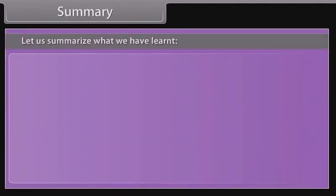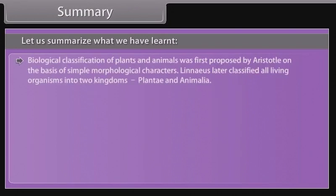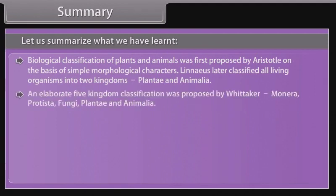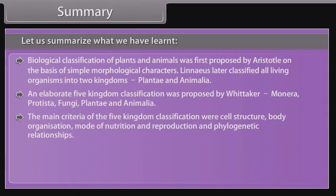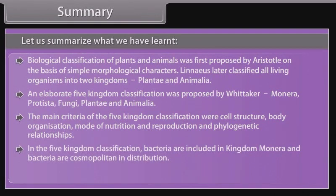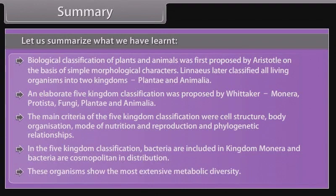Summary: biological classification of plants and animals was first proposed by Aristotle on the basis of simple morphological characters. Linnaeus later classified all living organisms into two kingdoms: Plantae and Animalia. An elaborate five kingdom classification was proposed by Whittaker: Monera, Protista, Fungi, Plantae, and Animalia. The main criteria were cell structure, body organization, mode of nutrition, reproduction, and phylogenetic relationships. In the five kingdom classification, bacteria are included in kingdom Monera and are cosmopolitan in distribution, showing the most extensive metabolic diversity.